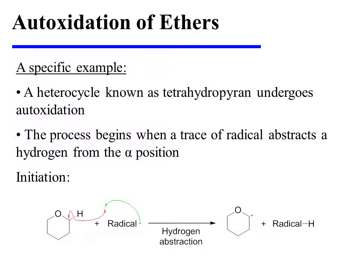In this specific example, a heterocycle known as tetrahydropyrane undergoes auto-oxidation. The process begins when a trace of radical abstracts a hydrogen from the alpha position of tetrahydropyrane, thereby generating the carbon-centered radical that will be active in the propagation steps.